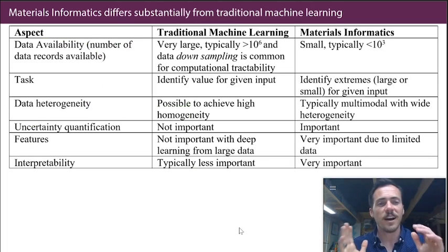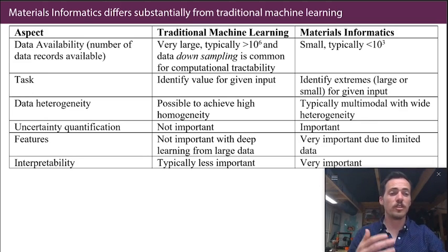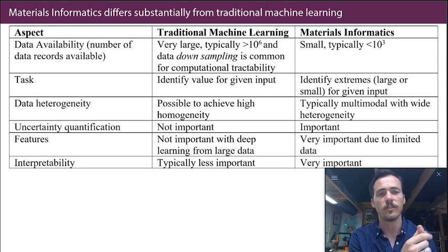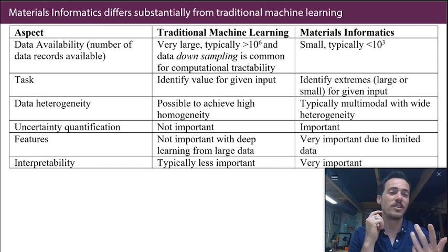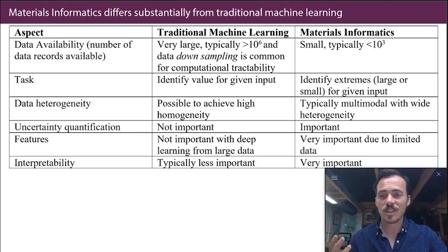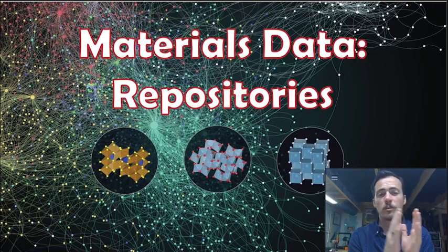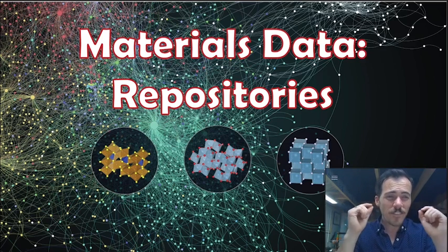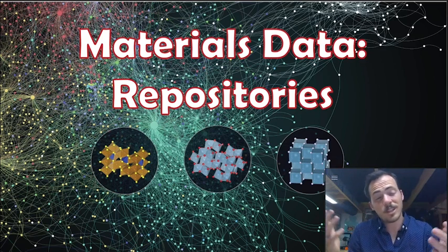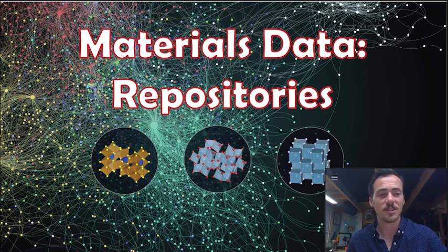For all these reasons, I think it's worth your time to take a course on materials informatics specifically: we don't have lots of data, we care about finding extremes over averages, we have multimodal and messy data, we care about uncertainty and interpretability, and we'll probably need to featurize our data. This dovetails nicely into our next video on materials data repositories — we'll do a two-part covering what's out there and how to access it. Thanks for being here. If you haven't yet, hit subscribe, hit like, drop me a comment. I plan to have 30 or 40 videos in this series, so if there's something you want to make sure makes the cut, drop it in the comments.